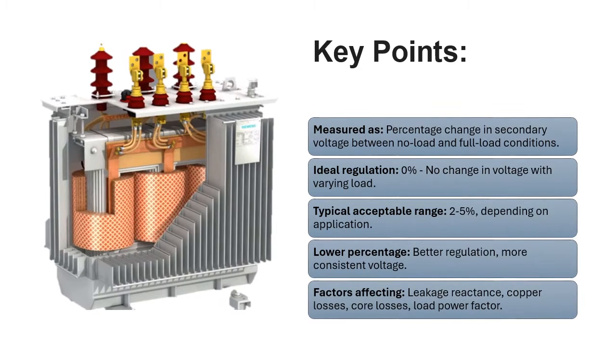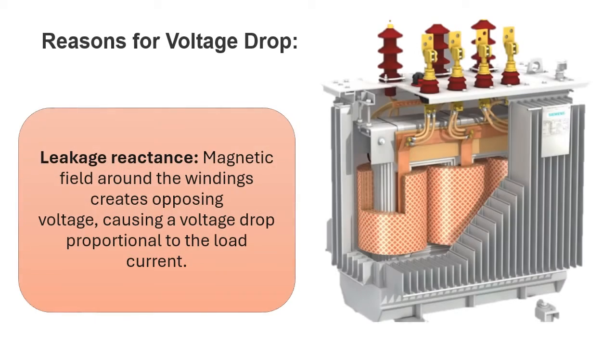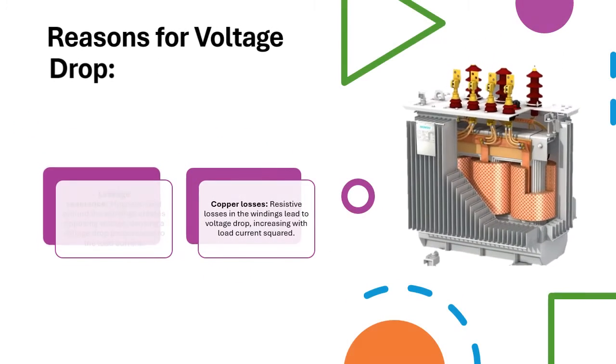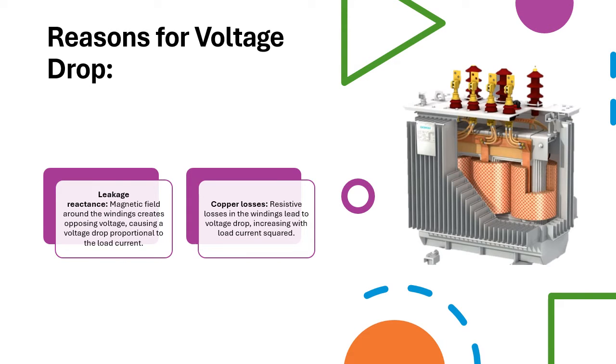Reasons for voltage drop: Leakage reactance - magnetic field around the windings creates opposing voltage, causing a voltage drop proportional to the load current. Copper losses - resistive losses in the windings lead to voltage drop.